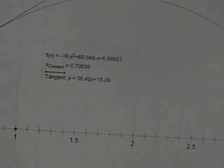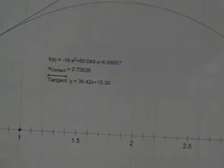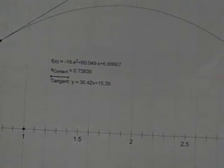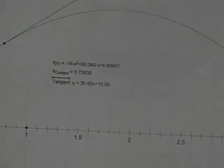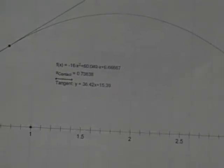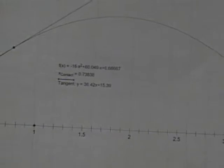When the ball is at its local max or the highest point on the parabola, it is 63 feet up in the air. This occurs at 1.87 seconds from the time that it is released.